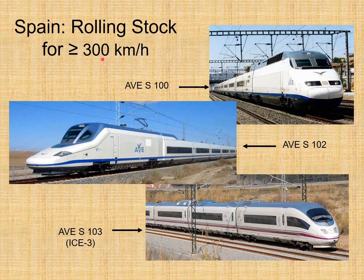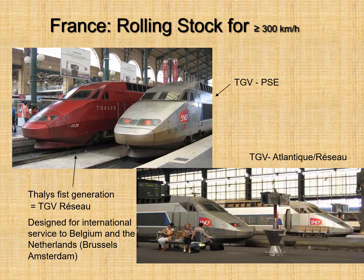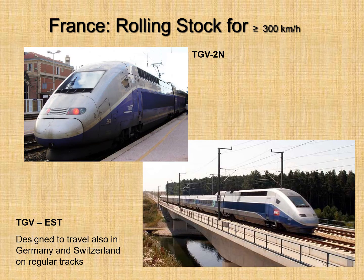In Spain, speeds exceed 300 km/h. In France, the TGV — an abbreviation of the French term meaning 'high-speed train' — is the main high-speed service.